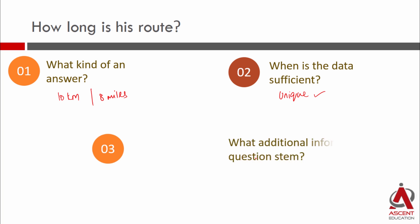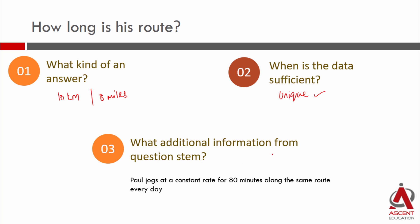Lastly, before looking at the statements, what additional information do we have from the question stem? In the question we have this data: He jogs at a constant rate for 80 minutes along the same route every day. So this data we can use with both the statements.